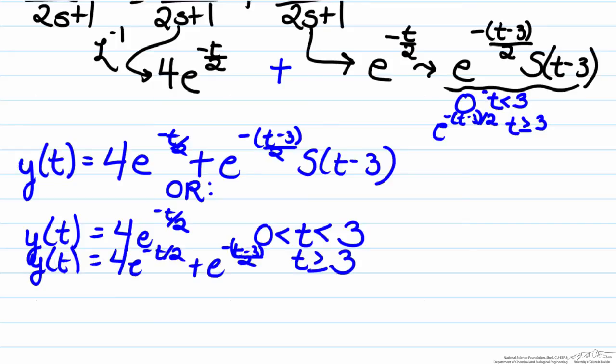An important point to note here is that these two functions are continuous because at t equals 3 this term will equal zero. The second answer shows that this is a continuous function, which is what we expect it to be.